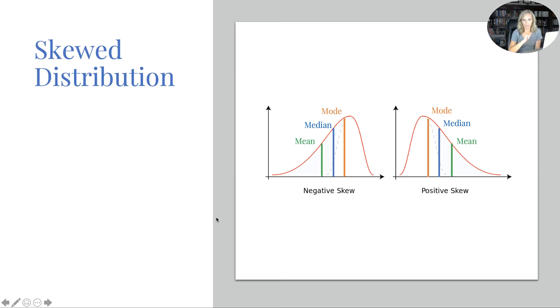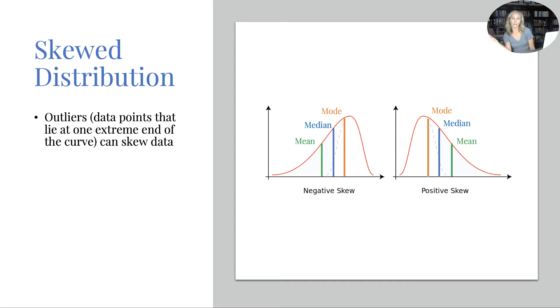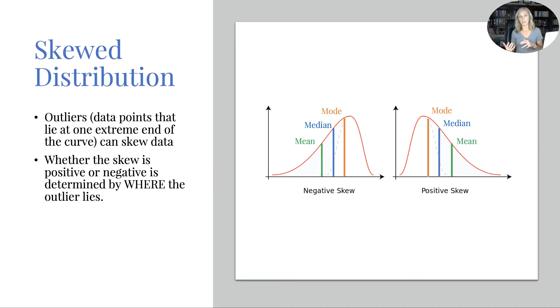Alright. Skewed data. Skewed meaning off. Different. Not quote normal. It's not a normal distribution. It means that outliers are involved. And these are data points that lie at one extreme of the curve or the other. And they skew the data. Meaning if you have a normal distribution of test scores, but Sally got like 150%, shouldn't be allowed. But hey, let's say she did. That totally skews the data. And it's no longer going to be a normal distribution or a normal curve. You have to know both a negative and positive skew. And whether the skew is positive or negative is determined by where the outlier lies.